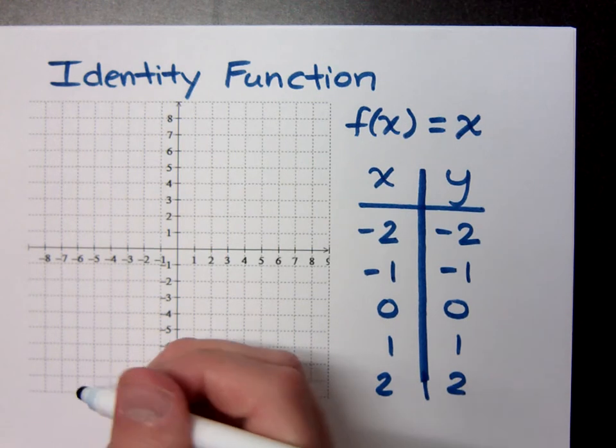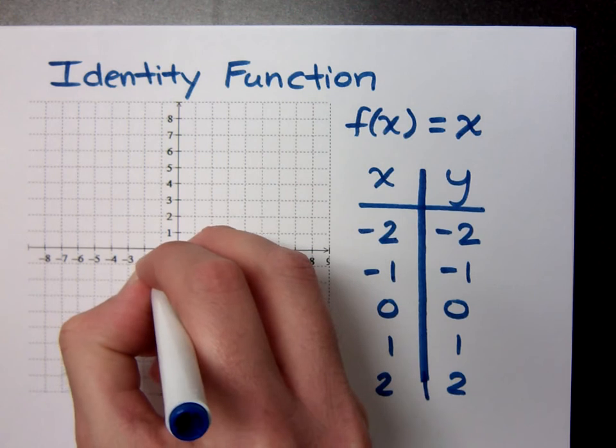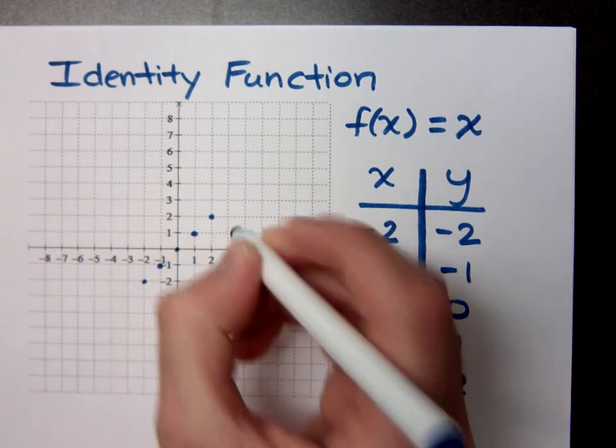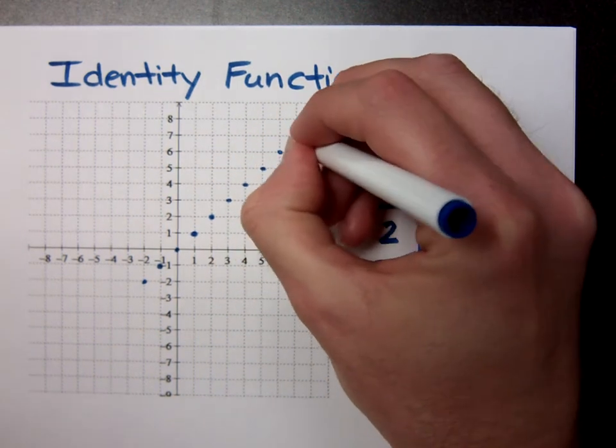Well, let's plot these guys and see what we have. We have negative 2, negative 2; negative 1, negative 1; 0, 0; 1, 1; and 2, 2. This is going to keep going. You'll have 3, 3; 4, 4; 5, 5, and so on.